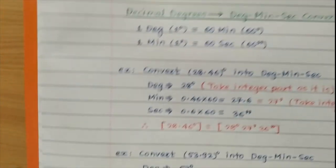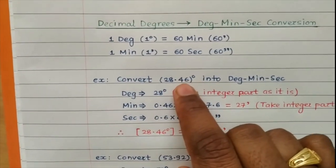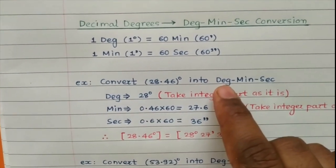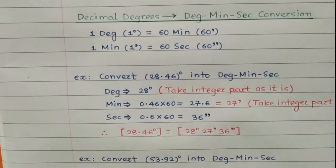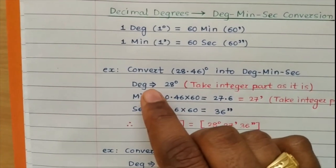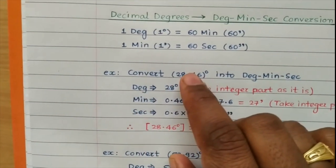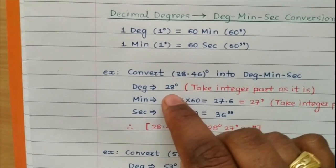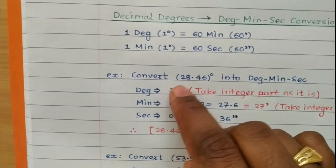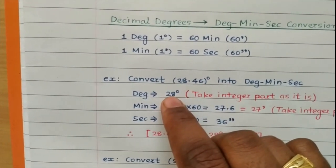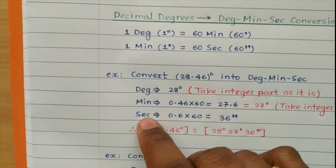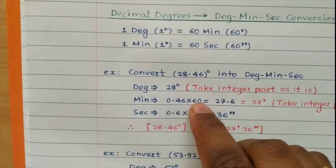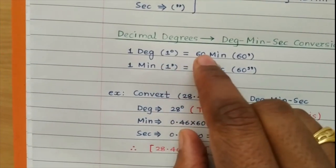Let us take an example. Suppose the angle is 28.46 degrees and we want to convert it into degrees, minutes and seconds. First, take only the integer part: 28. So that gives us 28 degrees. For the minutes, take the fractional part 0.46 and multiply by 60, since one degree equals 60 minutes.